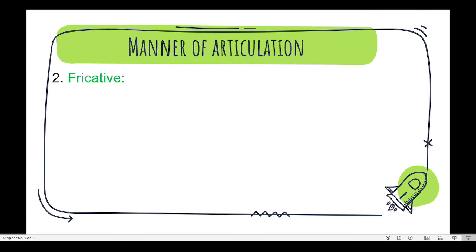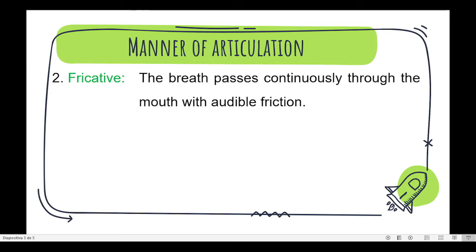Very good everyone! Let's continue. Number 2. Fricative. The breath passes continuously through the mouth with audible friction. Let's see the sounds: f, v, θ, ð, s, z, h, sh, ʒ.